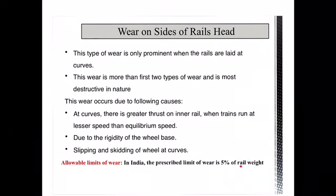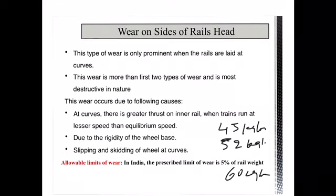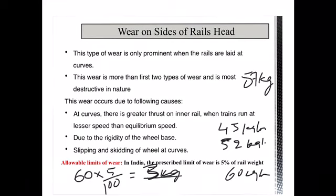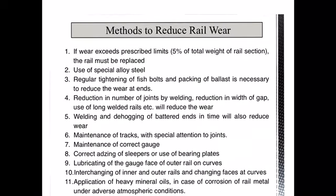In India, the prescribed limit for rail wear is 5% of the total weight of the rail section. Rail sections used are 45 kg/m, 52 kg/m, or 60 kg/m. For a 60 kg/m rail, 5% of 60 equals 3 kg. So after the rail has worn, if the weight has reduced by more than 3 kg, that rail section must be replaced with a new one or the wear must be rectified.